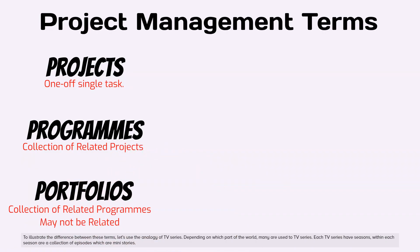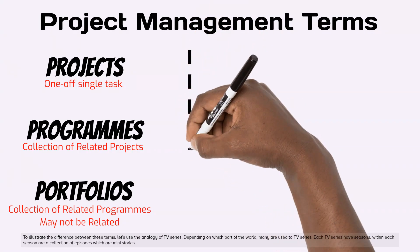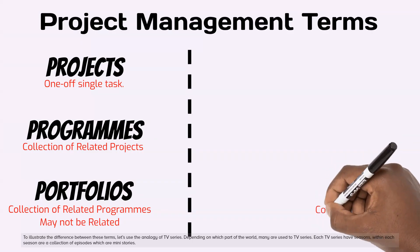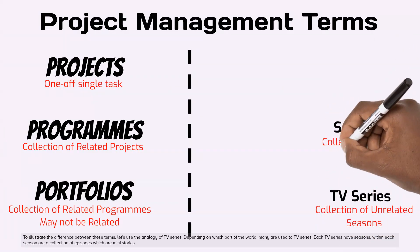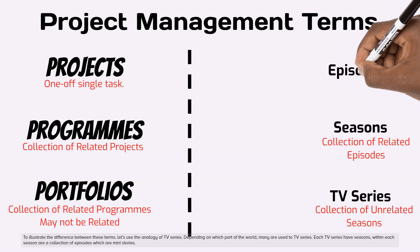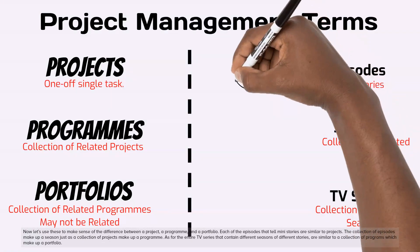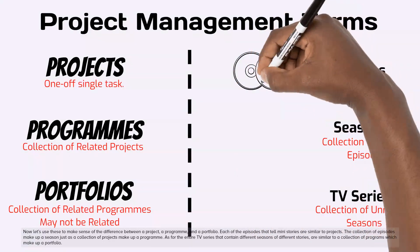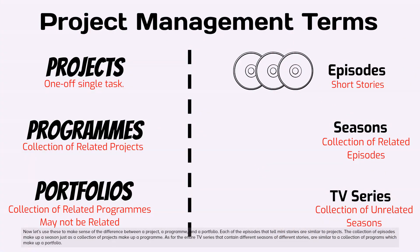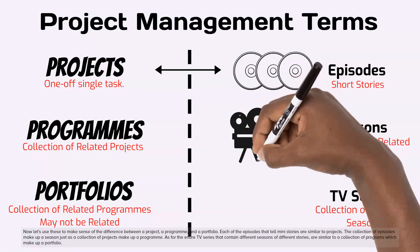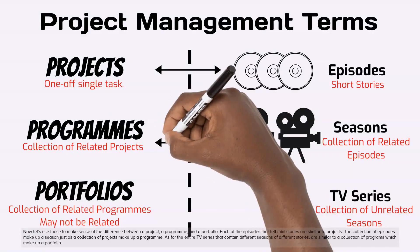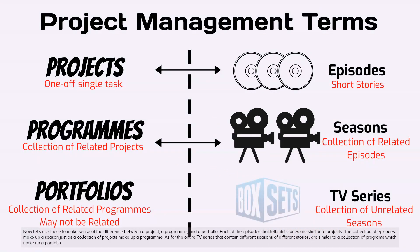To illustrate the difference between these terms, let's use the analogy of TV series. Many are used to TV series — each TV series has seasons, and within each season are a collection of episodes which are mini-stories. Each episode that tells a mini-story is similar to a project. The collection of episodes makes up a season, just as a collection of projects makes up a program. The entire TV series containing different seasons of different stories is similar to a collection of programs which makes up a portfolio.